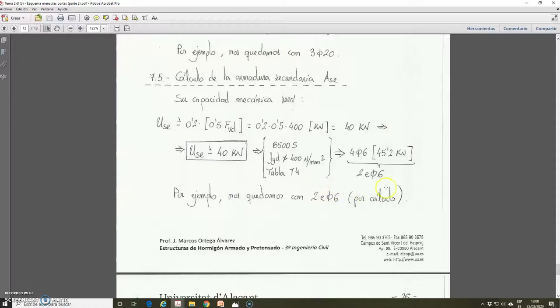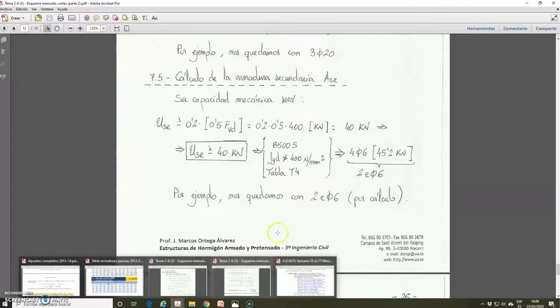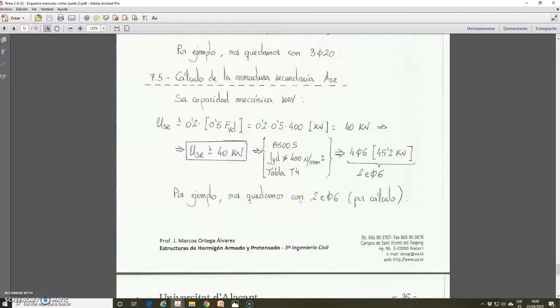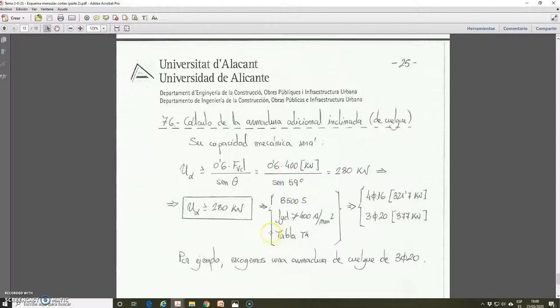I note here by calculation because this is a very low number. Geometrically, probably, we need to arrange more than two, because two is a very low number to distribute in the corbel. But here, I ask you only for the number. And this is a possible number, but I advise you that geometrically it could be necessary to arrange more stirrups.